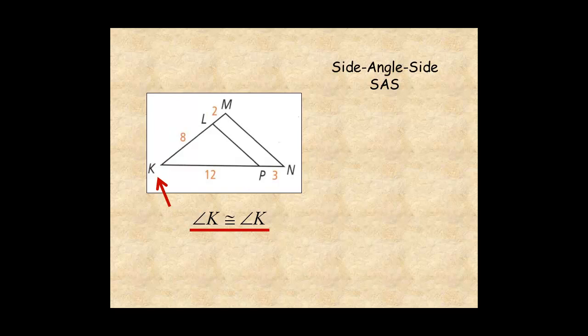Next, check the ratios of the sides that include the angle. For the longest sides, you have 12 over 12 plus 3, which is 12 over 15. For the other side, you have 8 over 8 plus 2, which is 8 over 10.